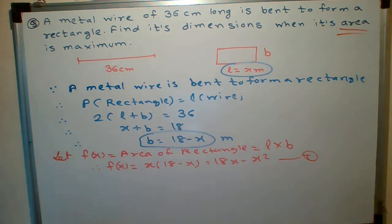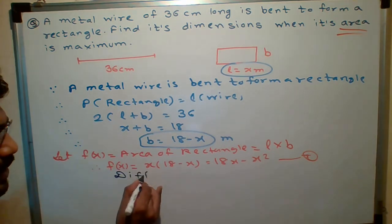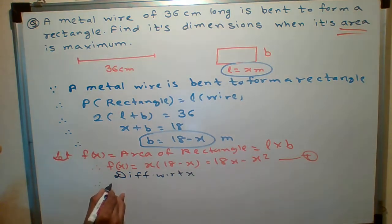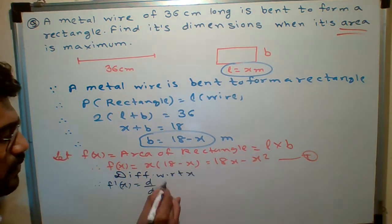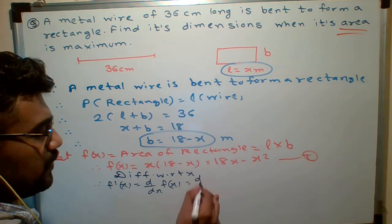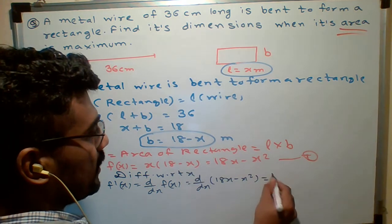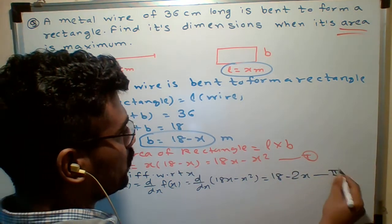I will do whatever I have done in the last lecture. In the last lecture, we will differentiate with respect to f. So that is what f prime of x equals to d upon dx of f of x. And you know derivative of f of x. 18x minus x. 18 minus 2x.